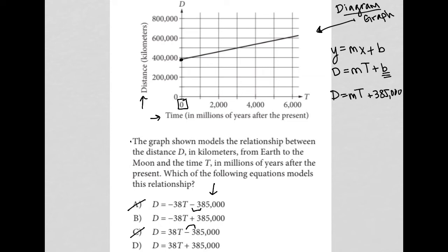Next, I can find the slope potentially. Let's see if I can find the slope. Well, again, looking at my answers, the only numbers that I have for my m values are either negative 38 or positive 38.